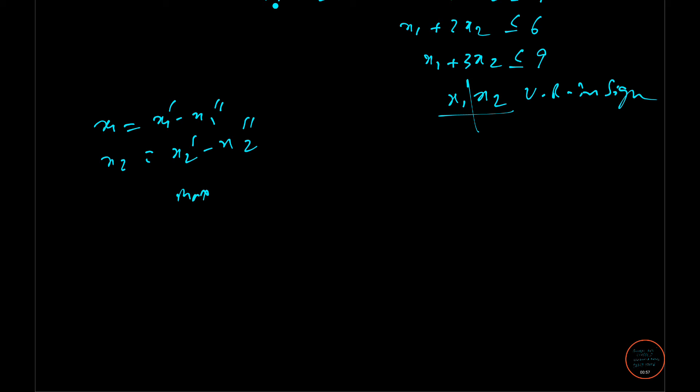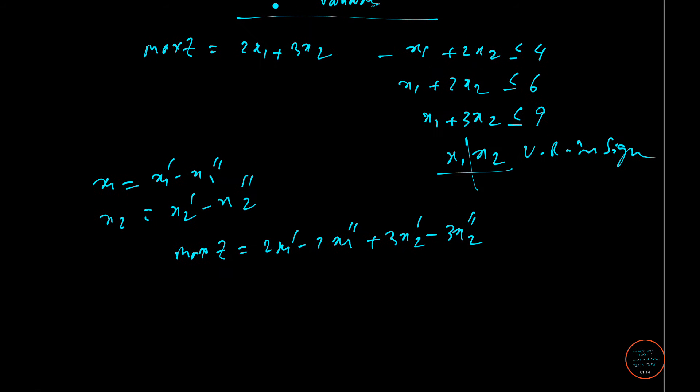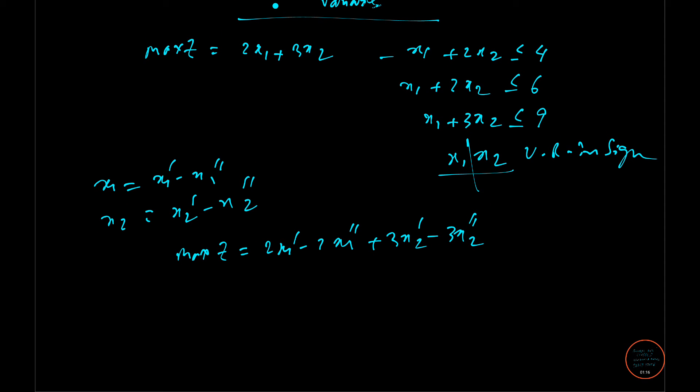Separately all these values are positive, so our formational structure will be maximization of z equals 2x1 dash minus 2x1 double dash plus 3x2 dash minus 3x2 double dash. So if we proceed like this, now all we need here is to form the LPP only.